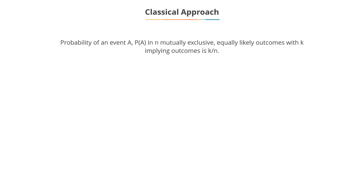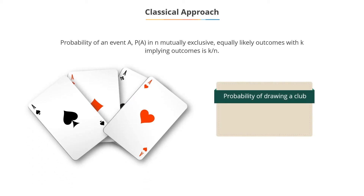Classical approach: when there are n mutually exclusive, equally likely outcomes, and k of them imply event A, p(A) is equal to k divided by n. The probability of drawing a club from a deck of 52 cards is 13 by 52, which is equal to one-fourth.